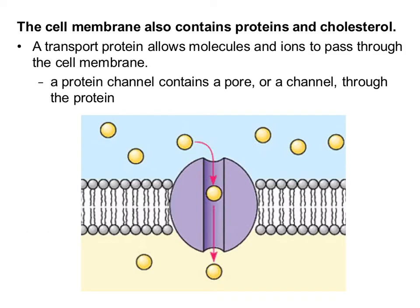Now we're going to look at a bunch of membrane proteins, or proteins that are stuck in the membrane. The first ones are called transport proteins, and these allow molecules and ions to pass through the cell membrane. Some stuff like oxygen, O2, can just go straight through the cell membrane. But some of the bigger molecules, or ions with a charge, are going to require a channel to run through. This is called a protein channel, and it's got a pore in the middle that lets molecules and ions pass through.